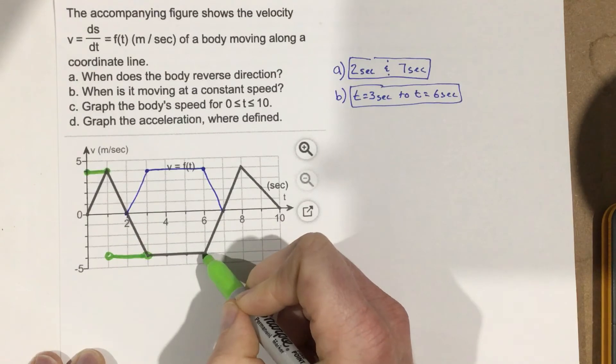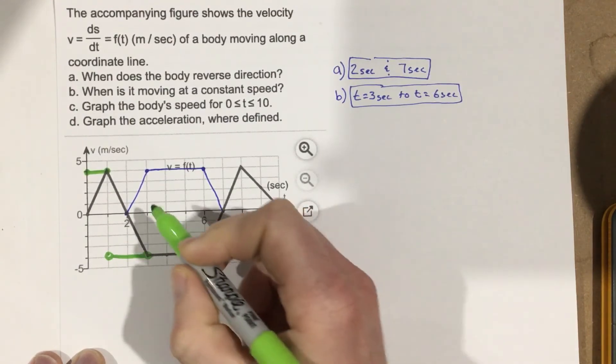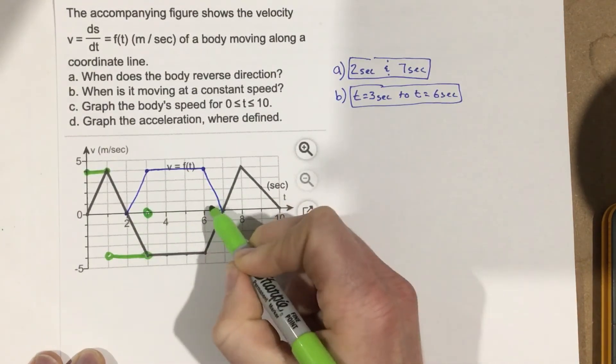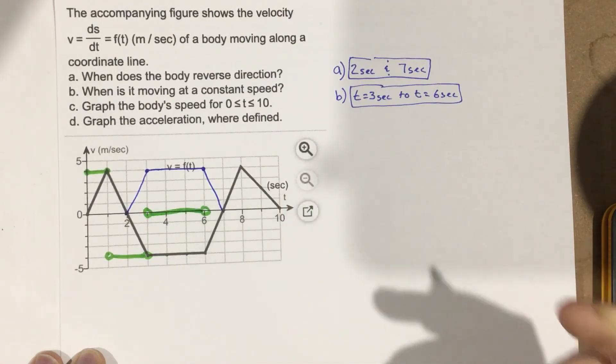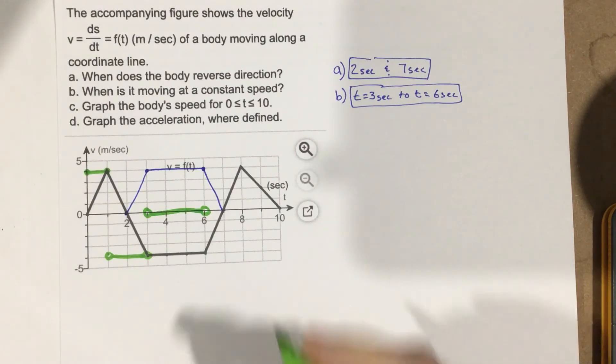This is a constant speed here, so the acceleration is going to have zero acceleration from here to here. We're not accelerating at all. We have a constant velocity, which means our acceleration is flat lined.